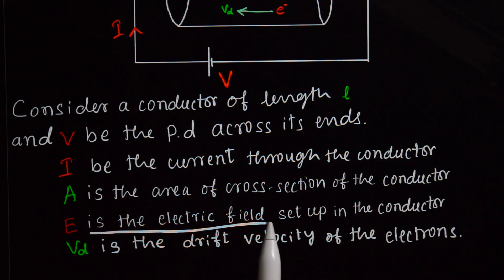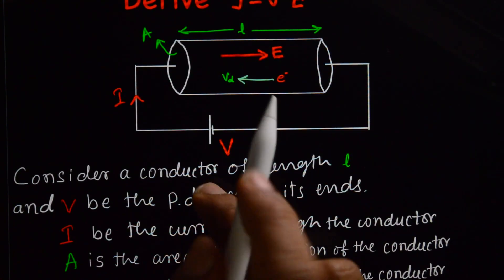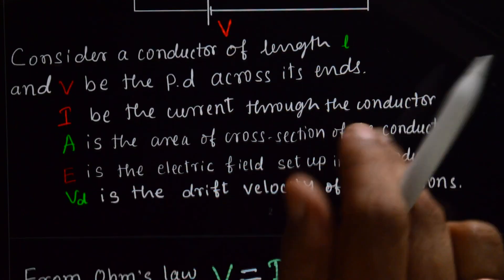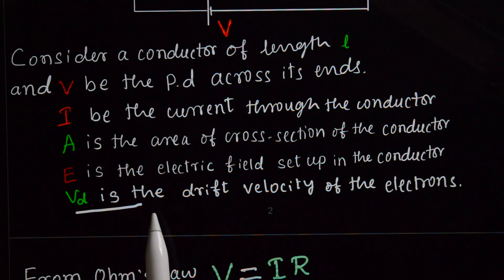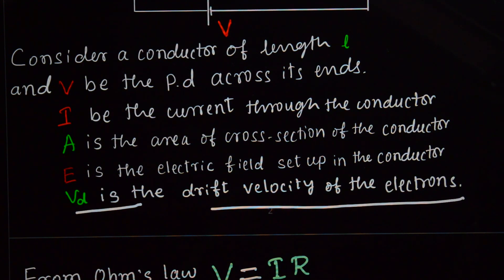E, electric field setup in the conductor. V subscript d, that is, drift velocity of electrons.